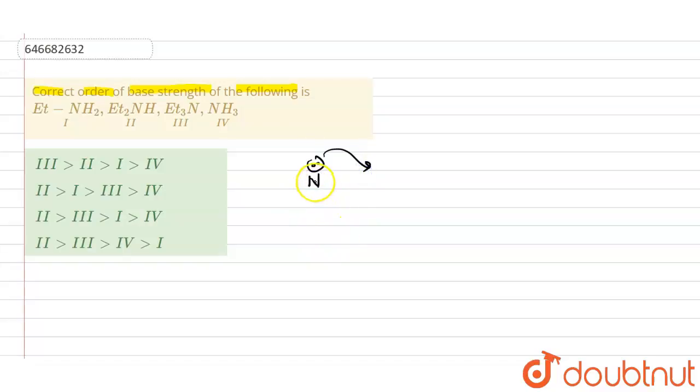As you can see, this third compound has a higher electron density because it is connected by three ethyl groups. So that will donate the electron to this nitrogen.